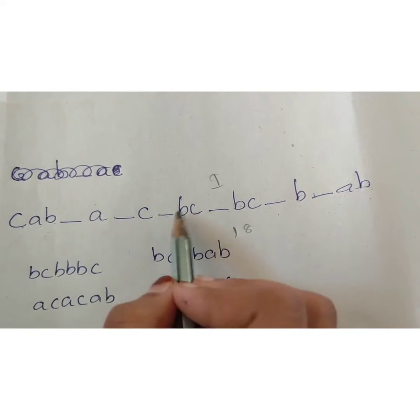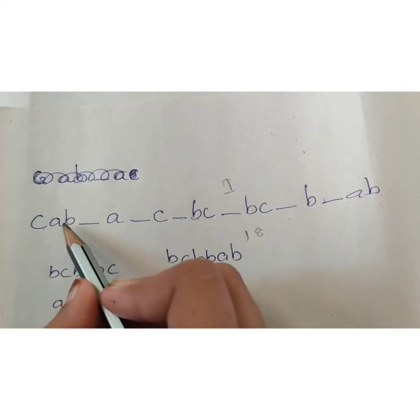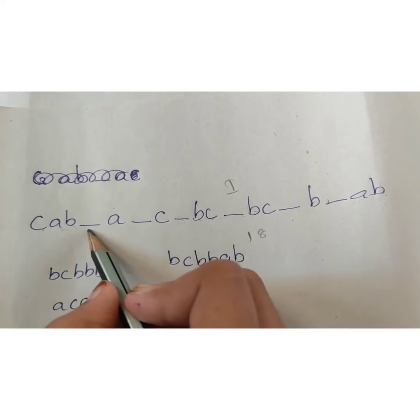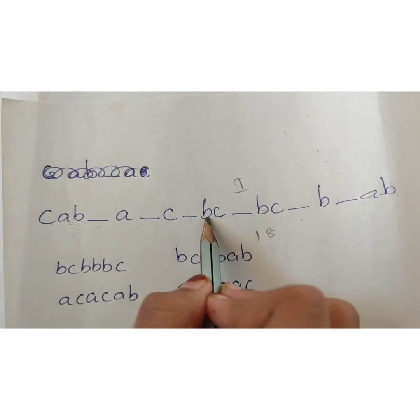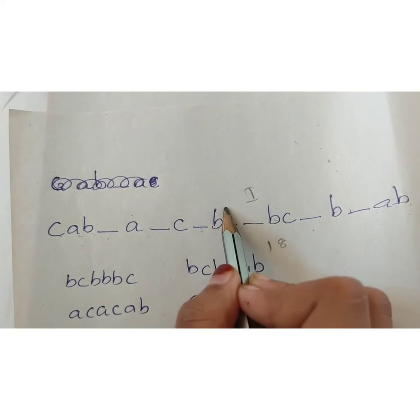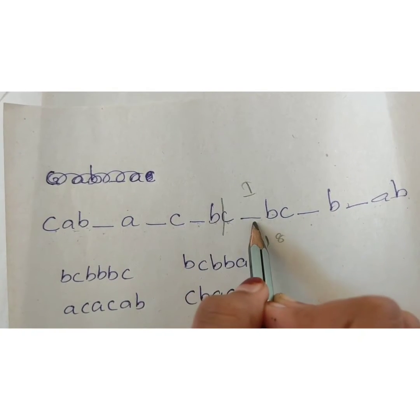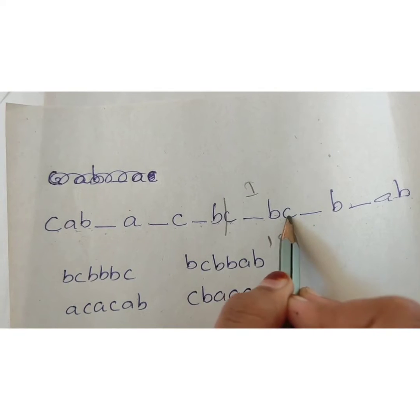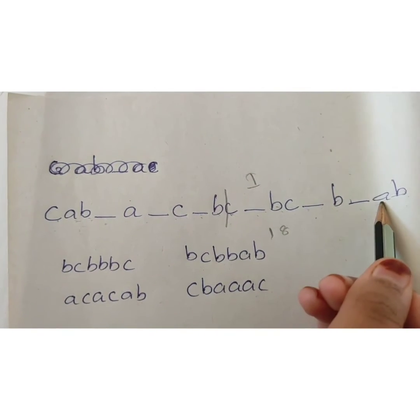Second, we will divide the nine letters. First, we mark one. This is the first group. Now, the second group is the nine letters.